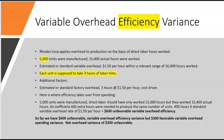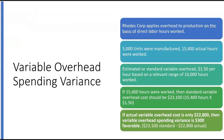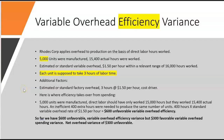Now we move from variable overhead spending to the variable overhead efficiency variance. They told us 5,000 units were manufactured and 15,400 actual hours were worked. When we switch from spending to efficiency, we need to know how many hours it takes to produce each unit. Each unit is supposed to take only 3 hours of labor time. So if 5,000 units were manufactured, it should have only taken 15,000 total hours.